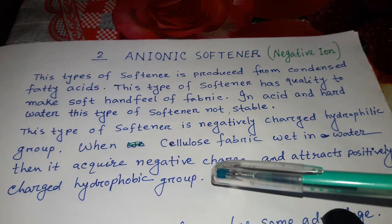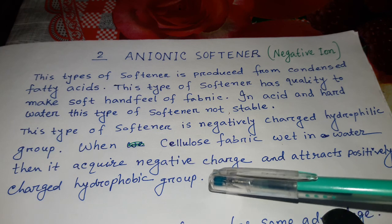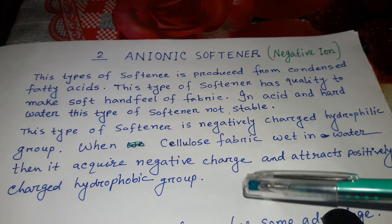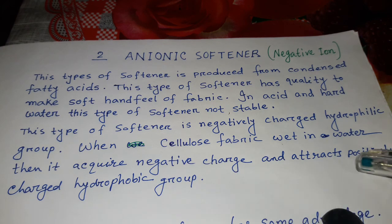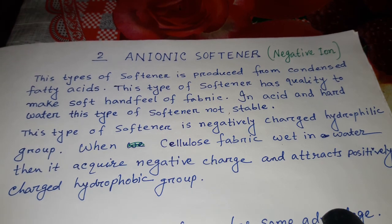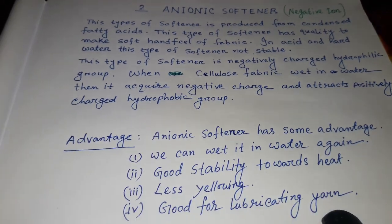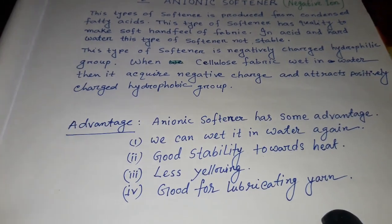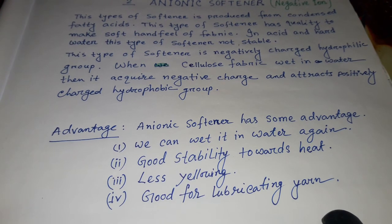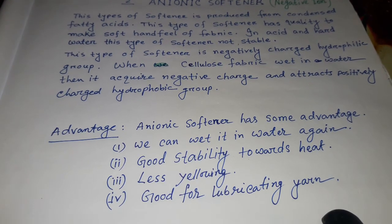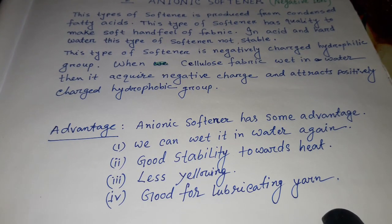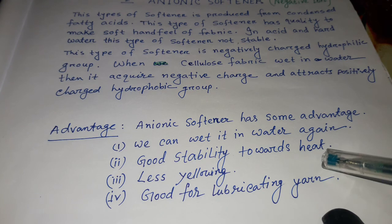When cellulose fabric is wet in water it acquires a negative charge and attracts the positively charged hydrophobic group. This is the action of anionic softener. Now we come to the advantages of anionic softener.